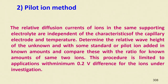In the pilot ion method, the relative diffusion current of ions in the same supporting electrolyte is independent of capillary characteristics, electrode, and temperature. The relative wave height of the unknown is compared with a known pilot ion added in known amounts, and the ratio is compared for known amounts of both ions. This procedure requires a minimum 0.2 volts difference between the ions under investigation.